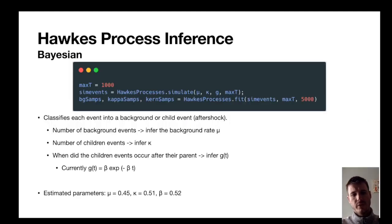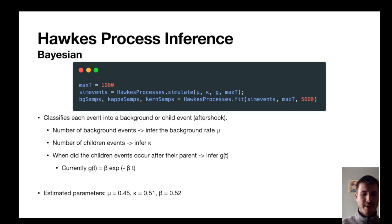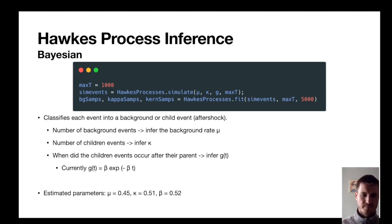If we wanted to infer the parameters of an unknown array of event times we can use the fit function. In this case we're fitting to some simulated events using the EM method, where we classify each event as either a background or a child event, then use the number of background events to infer the background rate, the number of child events to infer kappa, and when child events occurred relative to their parent to infer the kernel G(t) — the exponential distribution as previously described. We reclassify and repeat the process until the chains converge, and in this example we get estimated parameters of around 0.5, which is close to the true values.